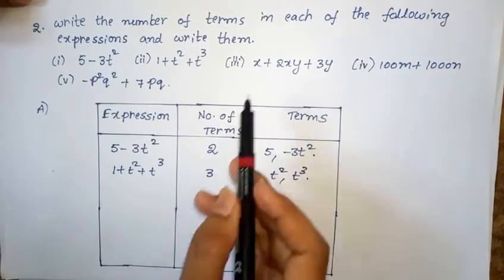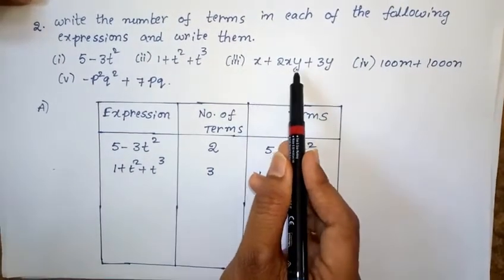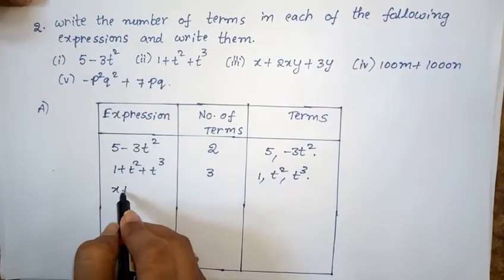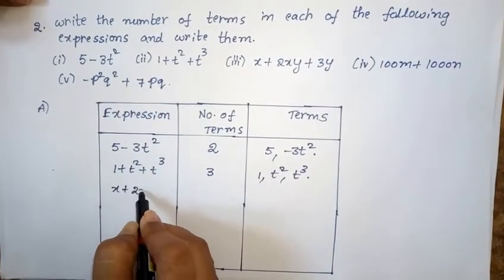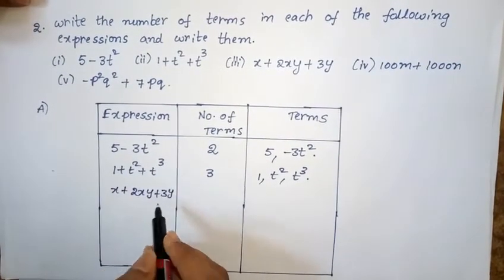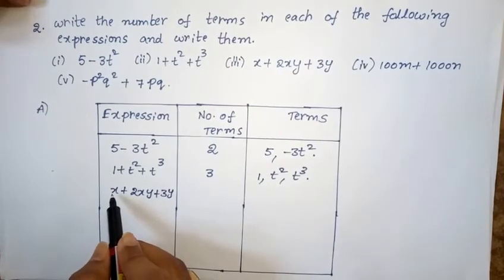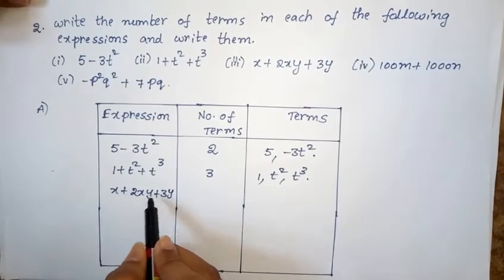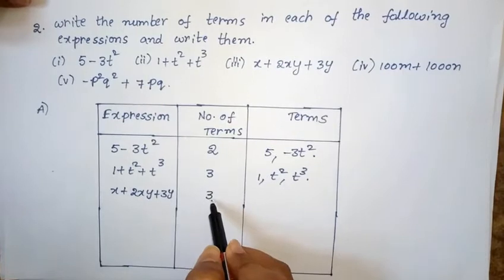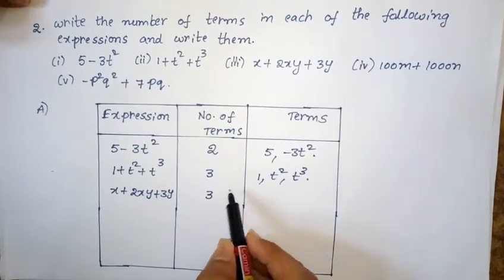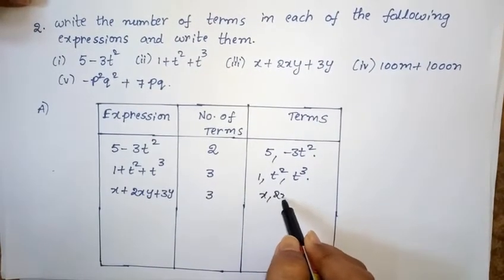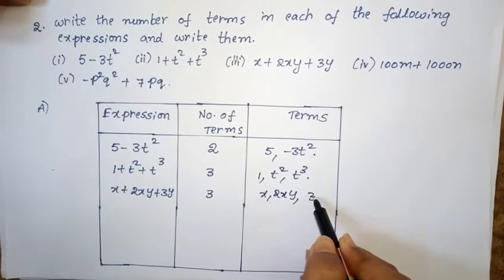Third expression: x plus 2xy plus 3y. Total terms are 3, so number of terms is equal to 3. The terms are x, 2xy, and 3y.